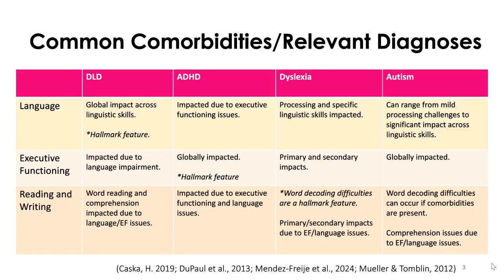I wanted to talk about comorbidities — I covered this in a previous Q&A but wanted to revisit it and share a visual. When we're thinking about comorbidities, with certain diagnoses there are a lot of them. The main thing to know is that when we think about how multiple diagnoses look, we want to think about what each diagnosis alone would look like, and then consider where they overlap and where they add something else that might be impacted.